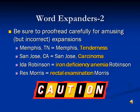While word expanders can be great for productivity, we do have to be careful about proofreading, because it can easily expand out to information that is not right. Looking at our previous examples: TN was 'tenderness,' so Memphis, Tennessee might expand out to 'Memphis tenderness.' Jose, California — we said CA was our word expansion for 'carcinoma.'